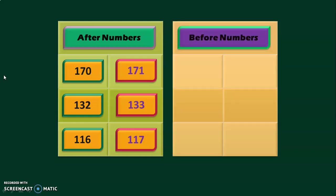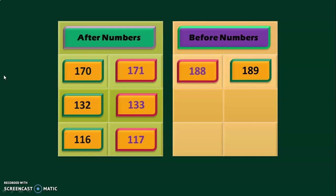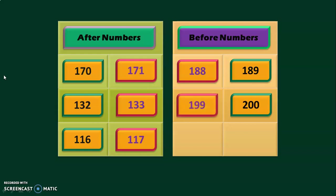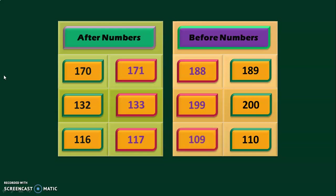Let us do before numbers now. The question given is 189. The number before 189 is 188. Next question is 200. What is the number which comes before 200? You have to do a backward counting. The answer is 199. The next question is 110. What is the number which occurs before 110? The answer is 109.